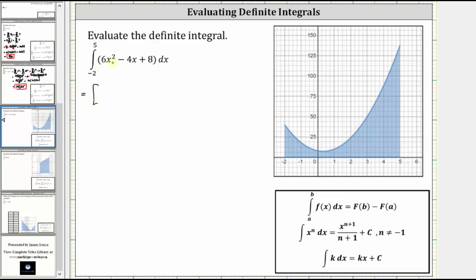The antiderivative of 6x² is equal to 6 times x³ divided by 3, minus the antiderivative of 4x is equal to 4 times x² divided by 2, plus the antiderivative of 8 is equal to 8x.